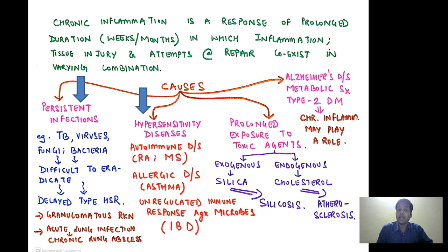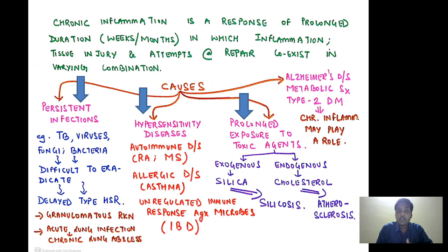Thirdly, we have prolonged exposure to toxic agents. Now these toxic agents can be exogenous or endogenous. Exogenous agents, for example silica in a case of silicosis, or endogenous agents, for example cholesterol in case of atherosclerosis. Also, Alzheimer's disease, metabolic syndrome, and type 2 diabetes mellitus — in all three conditions chronic inflammation may play a role.